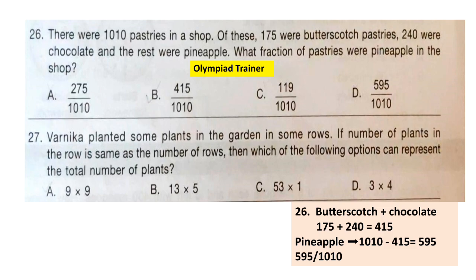Question 27: Vernika planted some plants in the garden in some rows. If the number of plants in each row is the same as the number of rows, which of the following options can represent the total number of plants? To find the total we multiply number of rows by number of plants in a row. Since both values are equal, it is a perfect square. Option A is the correct answer: 9 × 9.